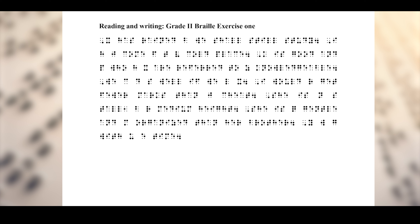Next line: 'Knowledge is good, and people who have it are referred to as knowledgeable.' The words we shall contract by putting one letter are: 'knowledge,' 'people,' 'have,' 'it,' 'as.' When we reach the word 'knowledgeable,' we refer to our rule — other letters have been added to 'knowledge,' specifically A, B, L, E. So we are going to spell the whole word out, as you can see in the Braille on the screen. Next: 'We can do so well if we like it.' We have implemented simple upper word signs by using letters for 'can,' 'do,' 'so,' 'like,' and 'it.'